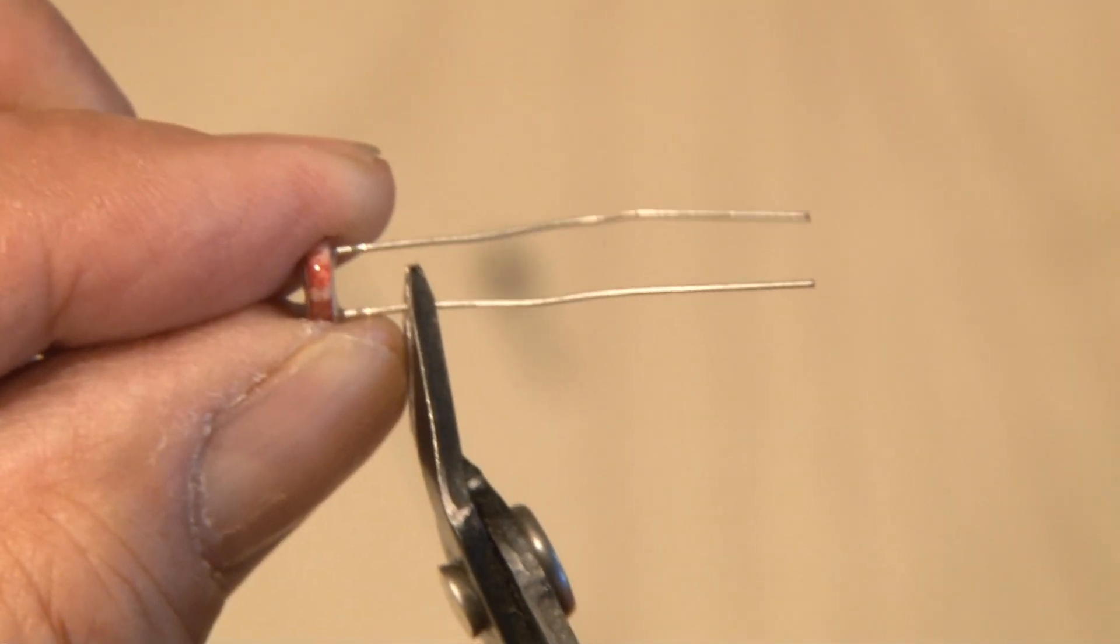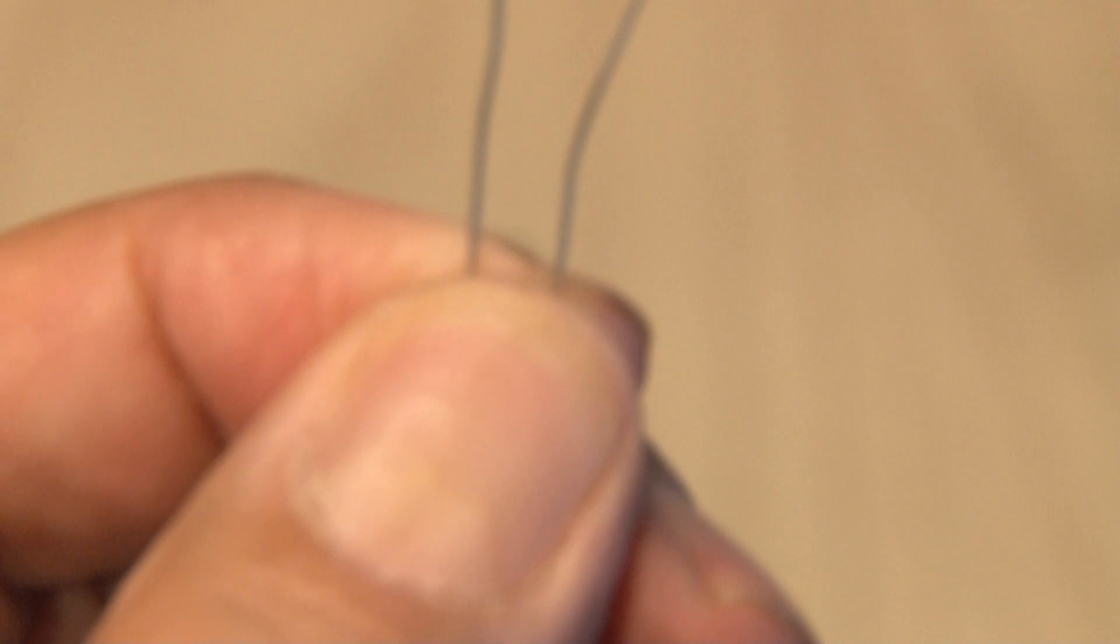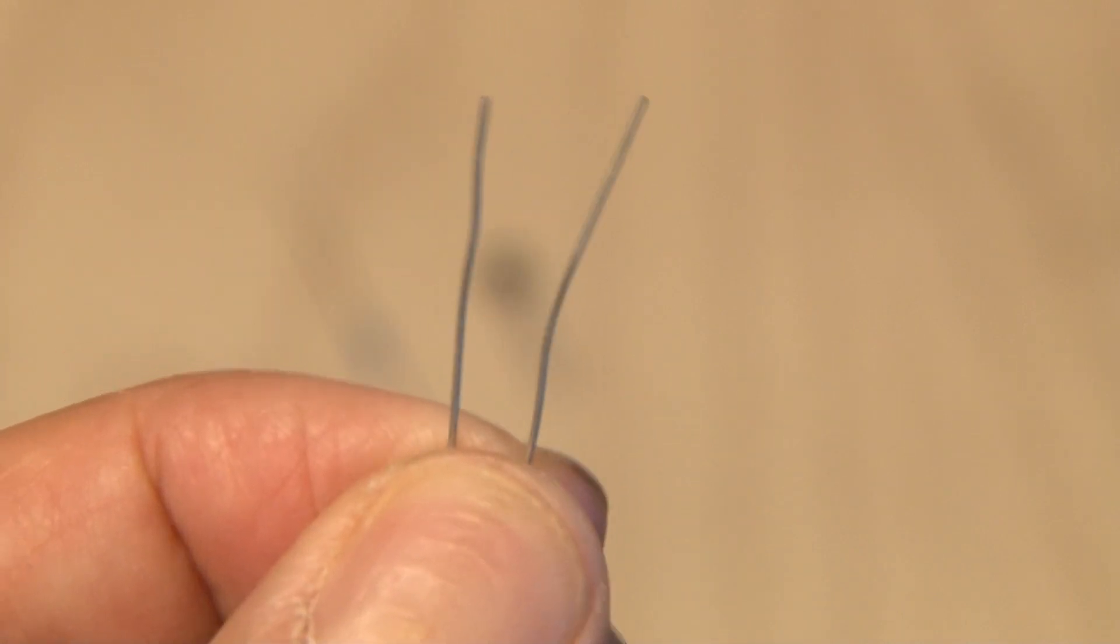In order to make this a nice compact circuit, we're going to trim the leads on the photoresistor down to about a quarter of an inch. Save those two trimmings because you can always use those for circuit connections.